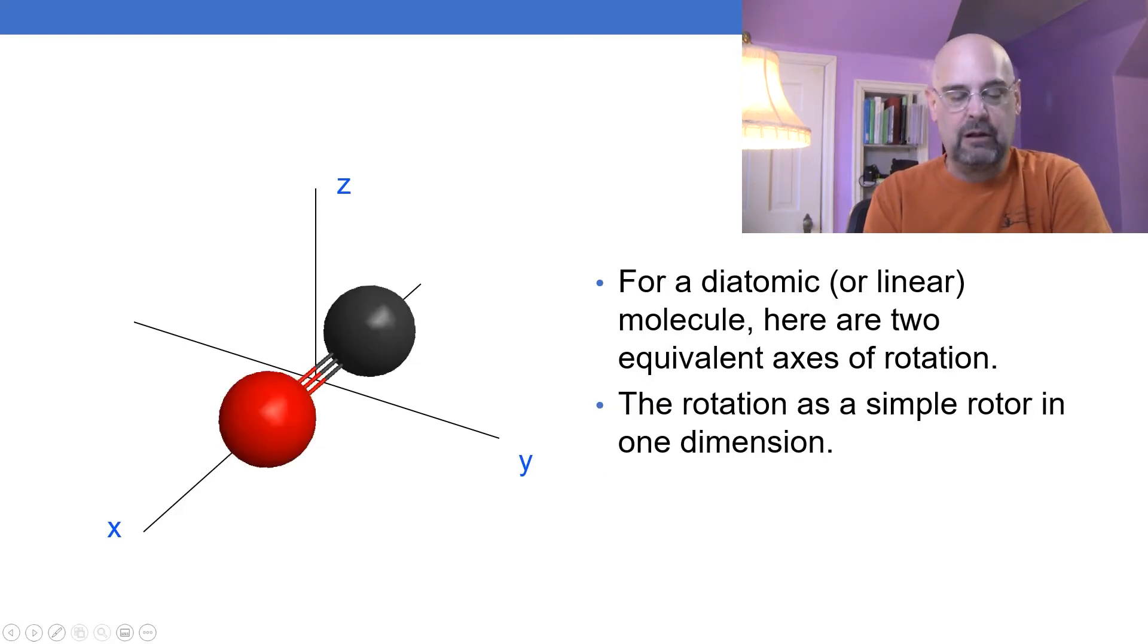For a diatomic molecule like carbon monoxide this becomes really easy. There are two equivalent axes of rotation. In this case it can rotate around the y-axis or the z-axis. So we're just going to treat this as a simple rotor in one dimension.